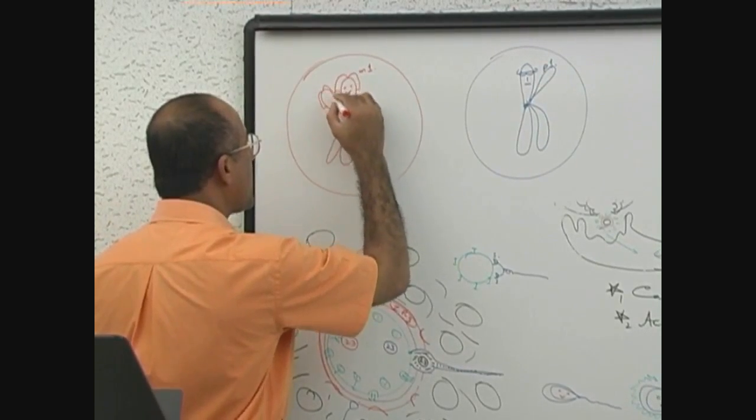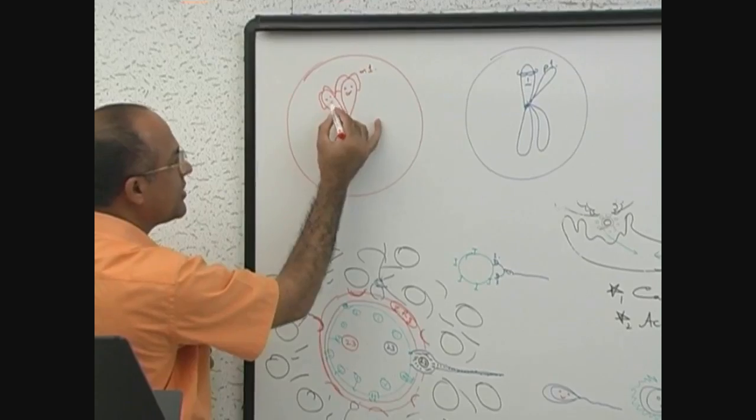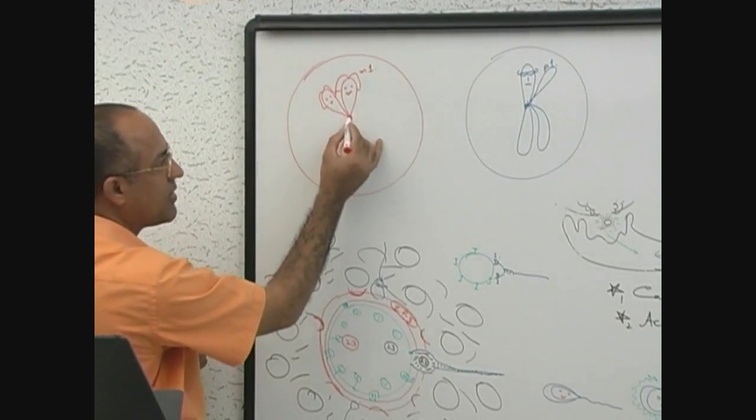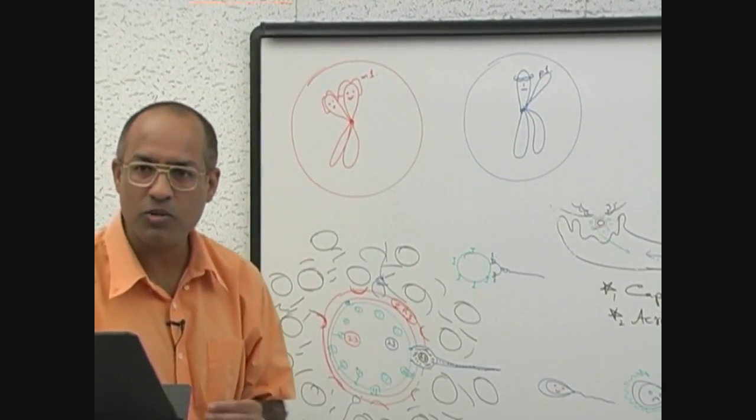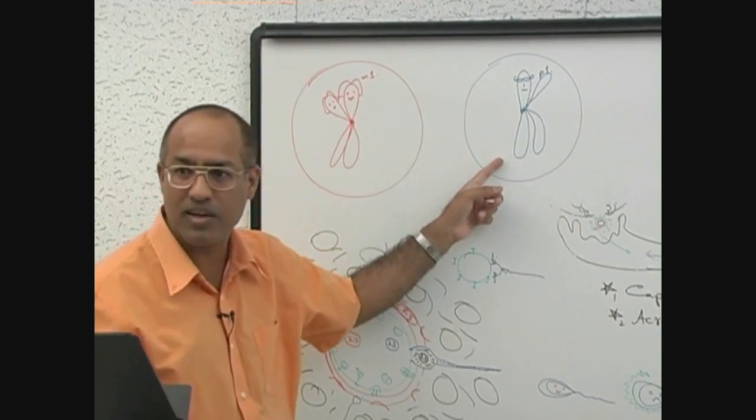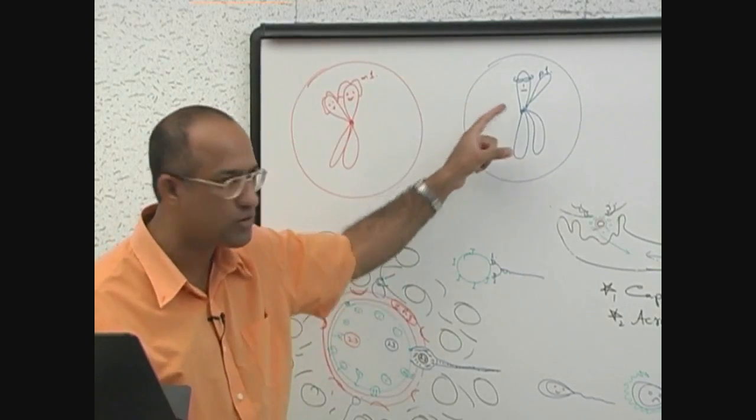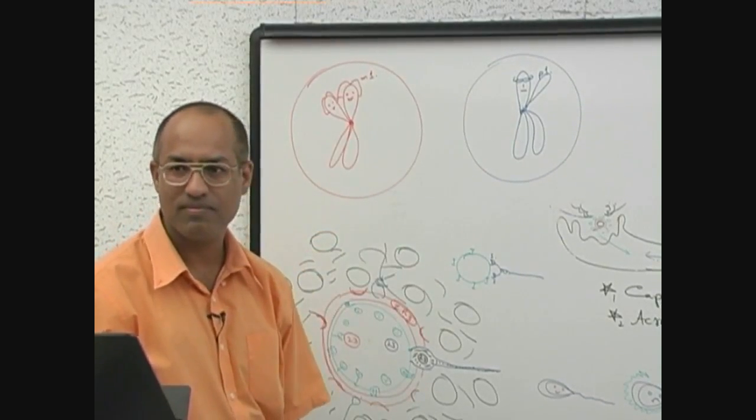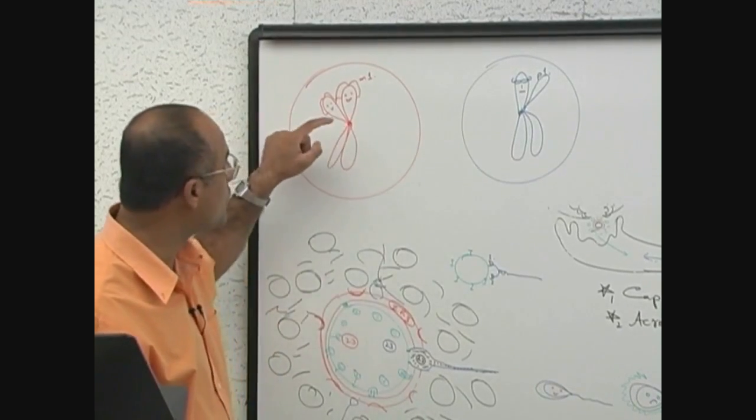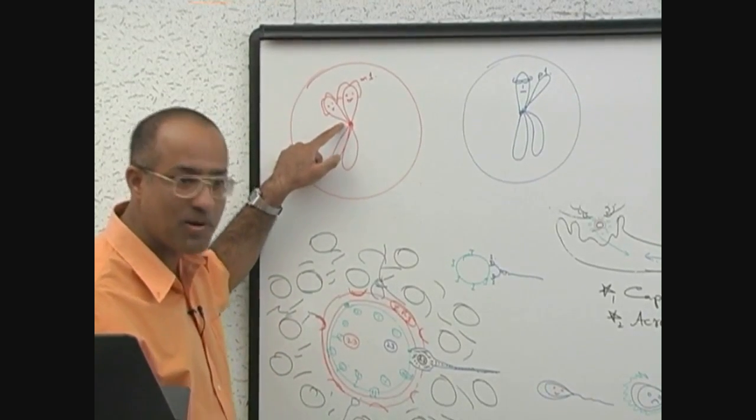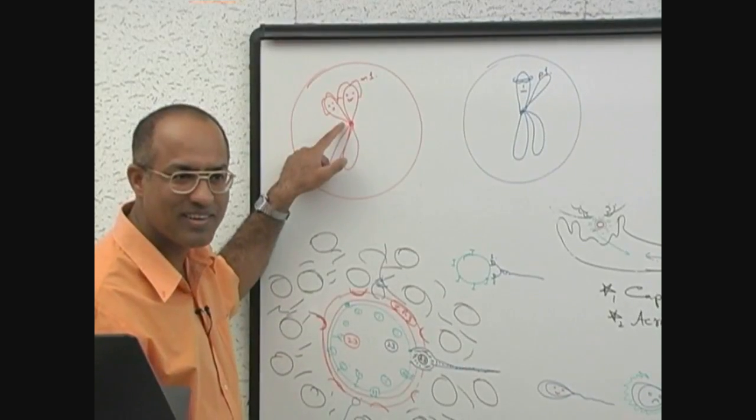Now tell me, how many maternal chromosomes are present here and how many paternal chromosomes are present here? Don't tell me two. Chromosomes are not counted by their DNA number, chromosomes are counted by their centromeres. This is still one chromosome with double DNA and this is also one chromosome with double DNA.